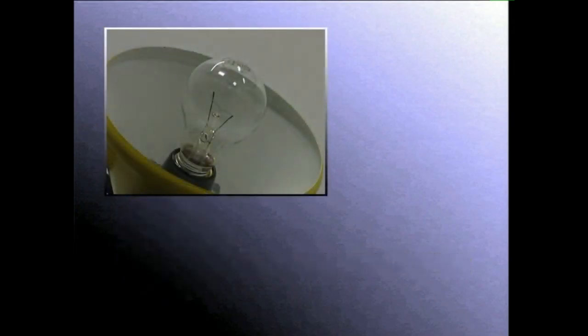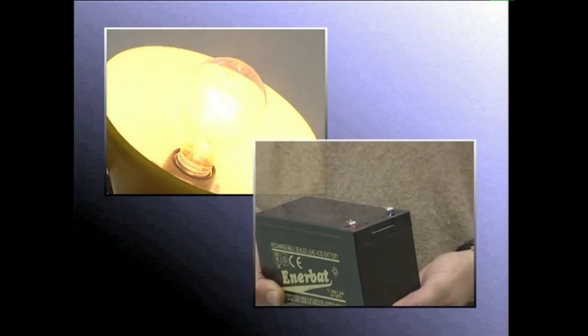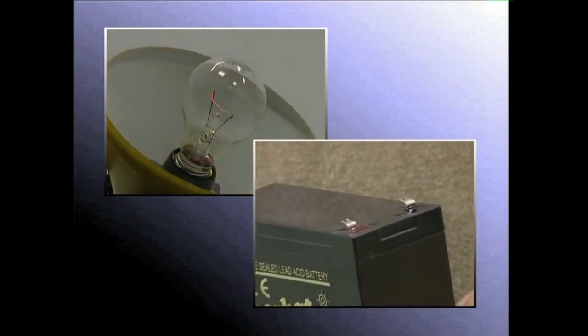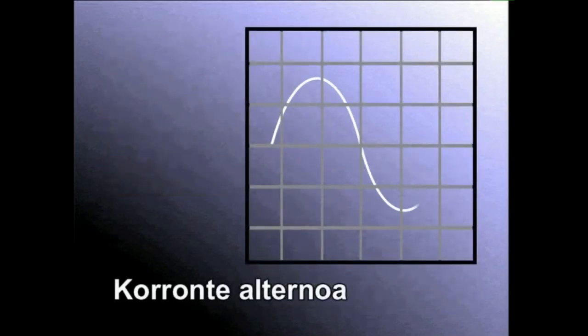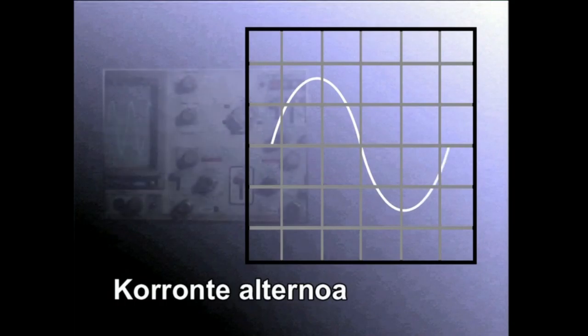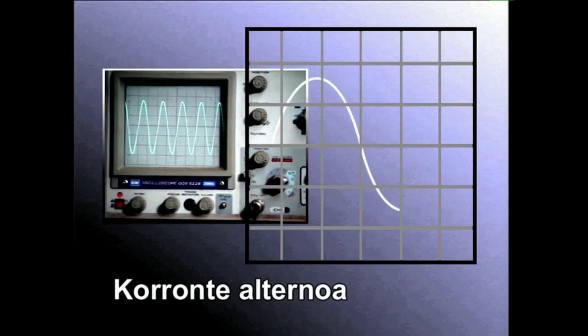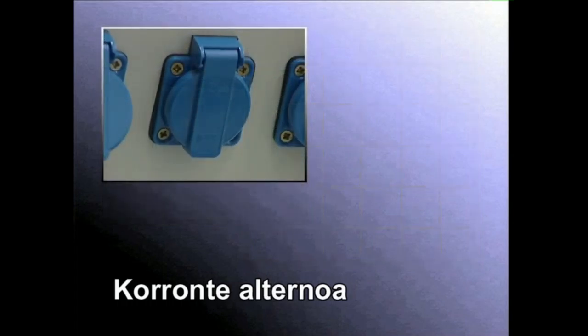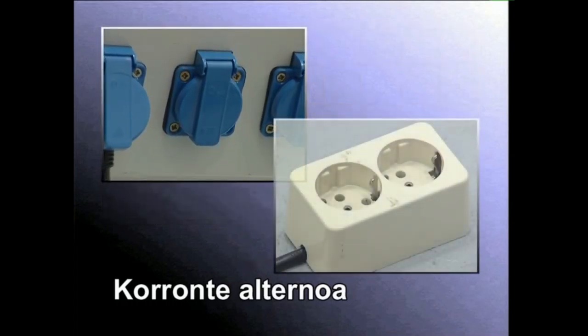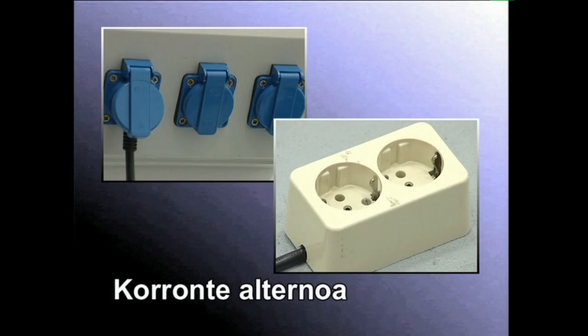Bi eratako argindarra kontsumitzen dugu: korronte alternoa eta korronte zuzena. Korronte alternoa, periodikoki noranzkoz eta intentsitatez aldatzen den korronte elektrikoa da. Sinusoidal ere deitzen zaio eta haren ezaugarriak osziloskopio baten bitartez ikus daitezke. Etxeko edo lantegietako entxufeetan daukagun korrontea alternoa izaten da.